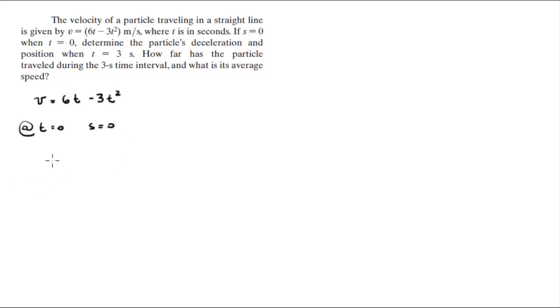You know that the acceleration is given by the derivative of the velocity. So when you take the derivative of the velocity you get that the acceleration is equal to negative 6t plus 6. So the acceleration when t equals 3 comes out to be negative 12 meters per second squared. That's it for the first part.